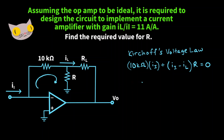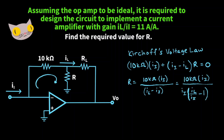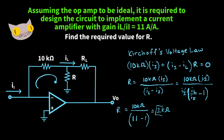Now we need to get R by itself. By rearranging the equation, we get R equal to 10kΩ times I_I all over I_L minus I_I. We can factor out I_I in the denominator and cancel, leaving R equal to 10kΩ over (I_L/I_I minus 1). We know I_L over I_I is 11, so we have 10kΩ over (11 minus 1), which gives us R equal to 1 kΩ.